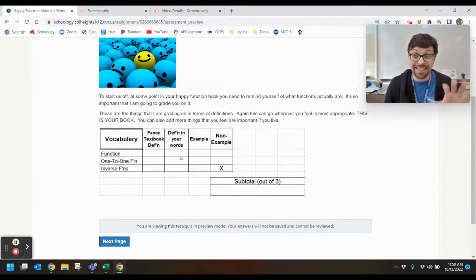Every once in a while, you'll see these little things. These are rubrics that I'm using in order to score your Happy Function Book. So you can see having this vocabulary of functions one-to-one and inverses is worth three points. These are the different things that I'm looking for. So nothing to copy down here.